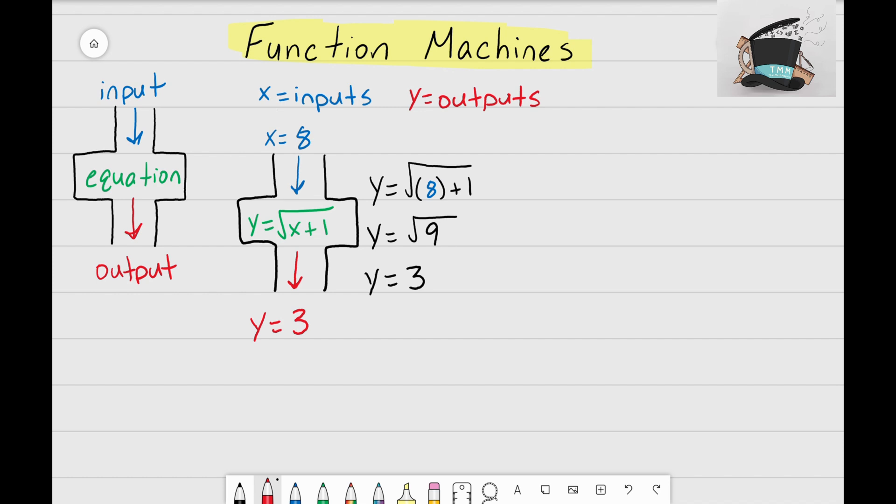Let's work through another example. I'm going to draw my function machine and again I'm going to keep the same equation inside, y equals the square root of x plus 1, and I'm going to drop in a new input of x equals 12.